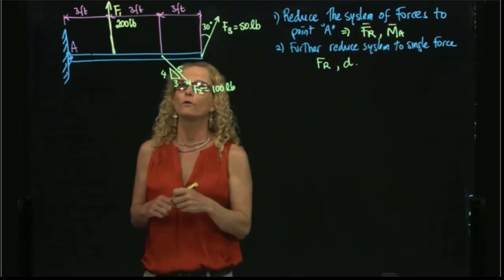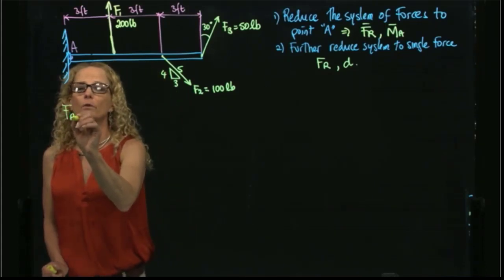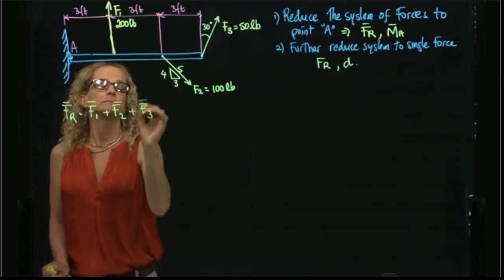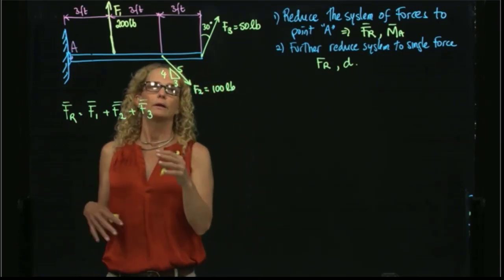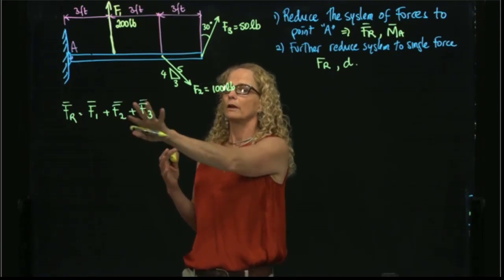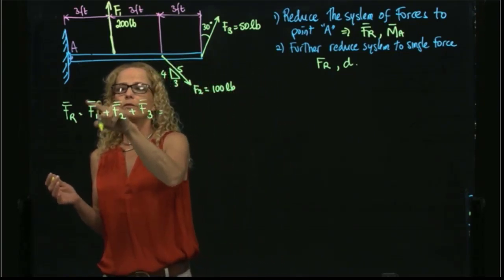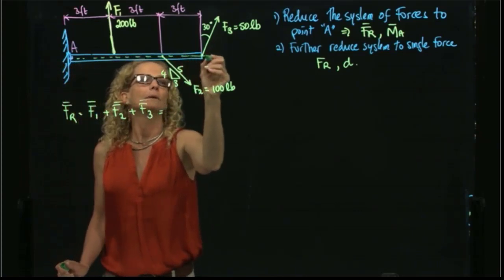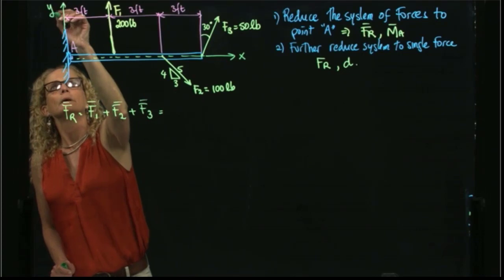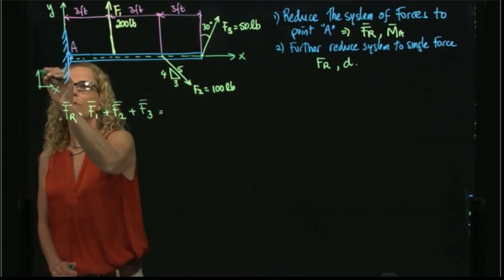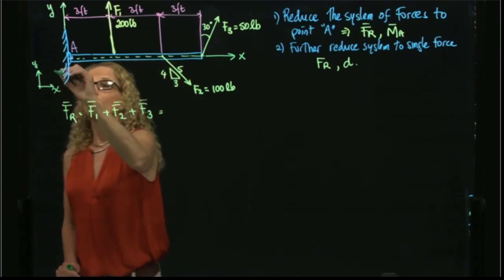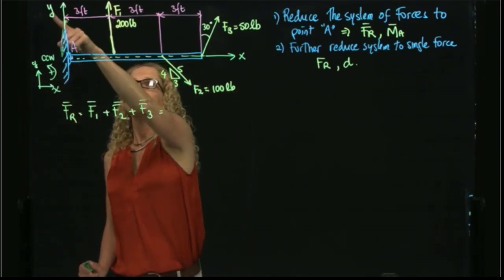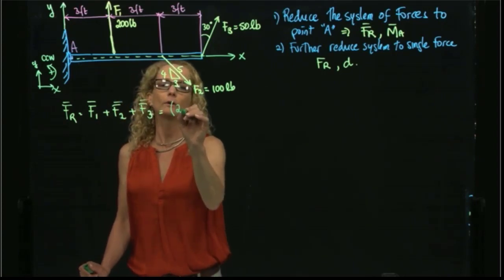Let's start to find the resultant force. The resultant force will be equal to F1 plus F2 plus F3. We will find the components of F1 using the coordinate system X and Y. Counter-clockwise moments are positive. F1 has only a component in Y, so that's 200 pounds in Y.